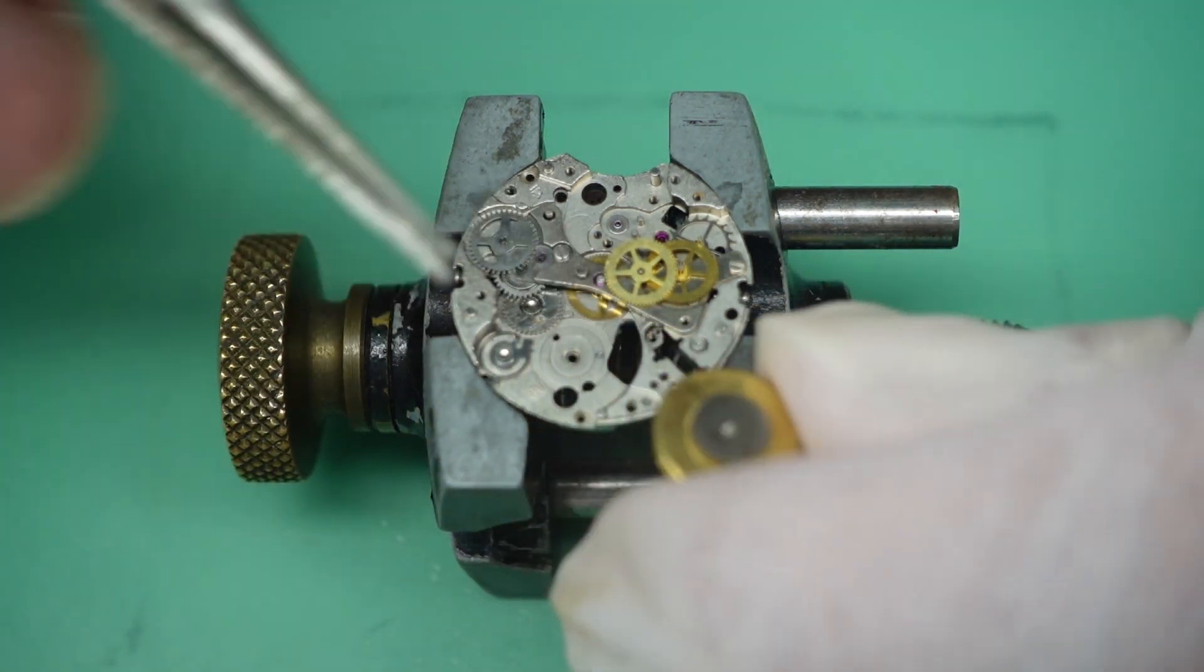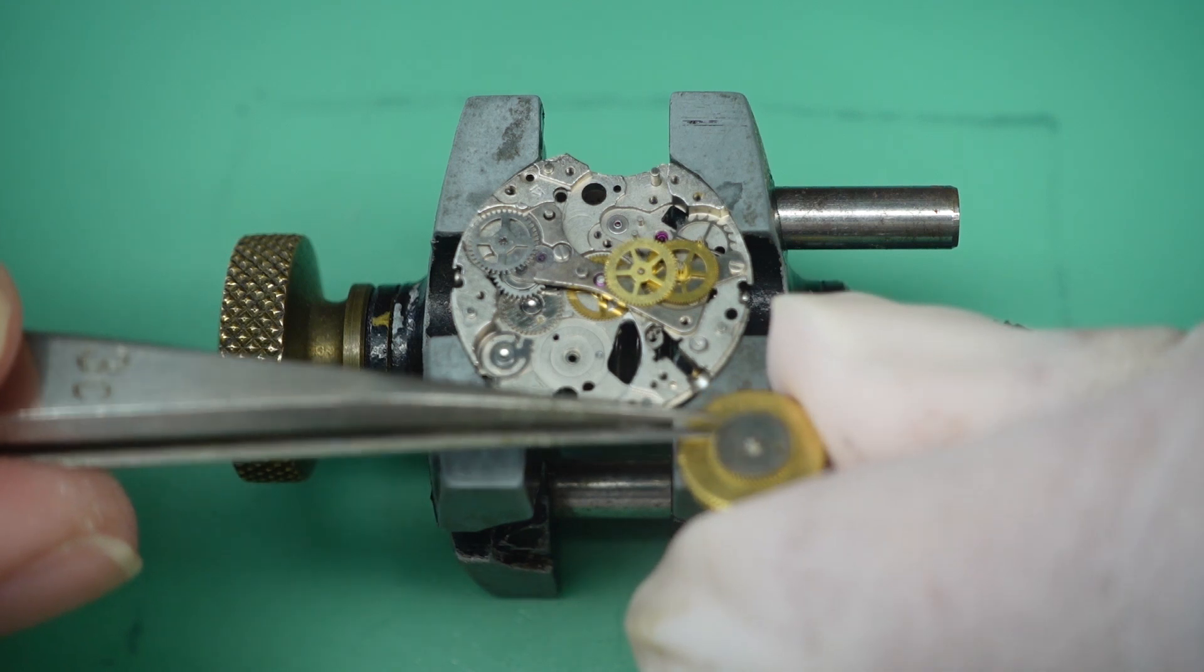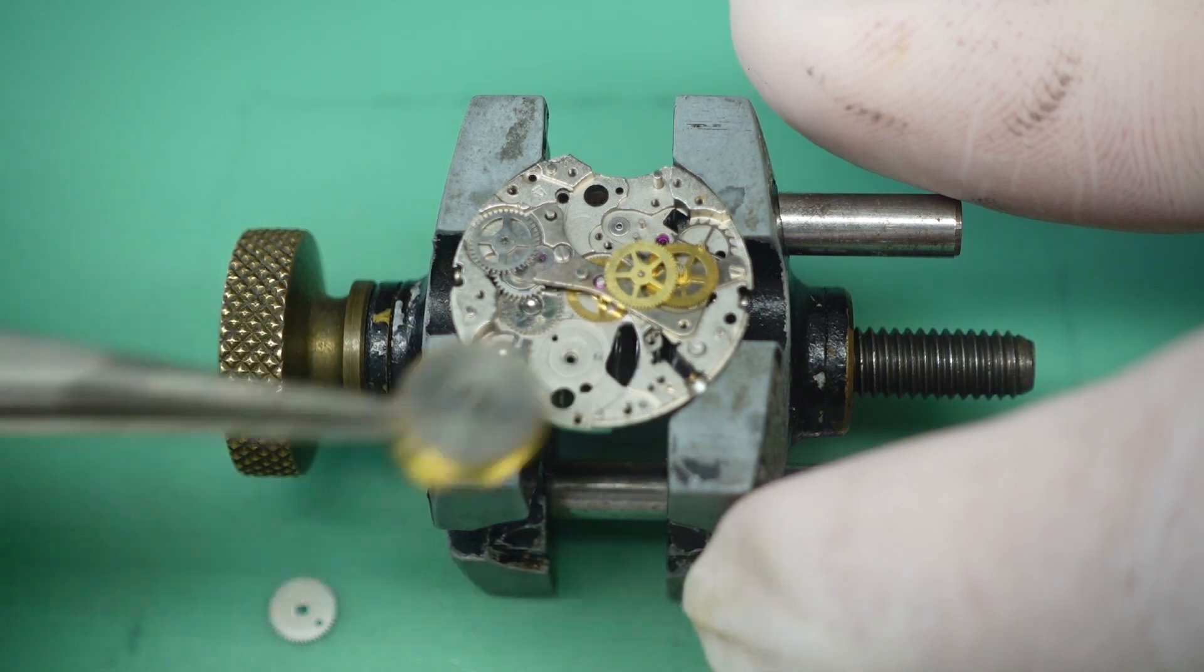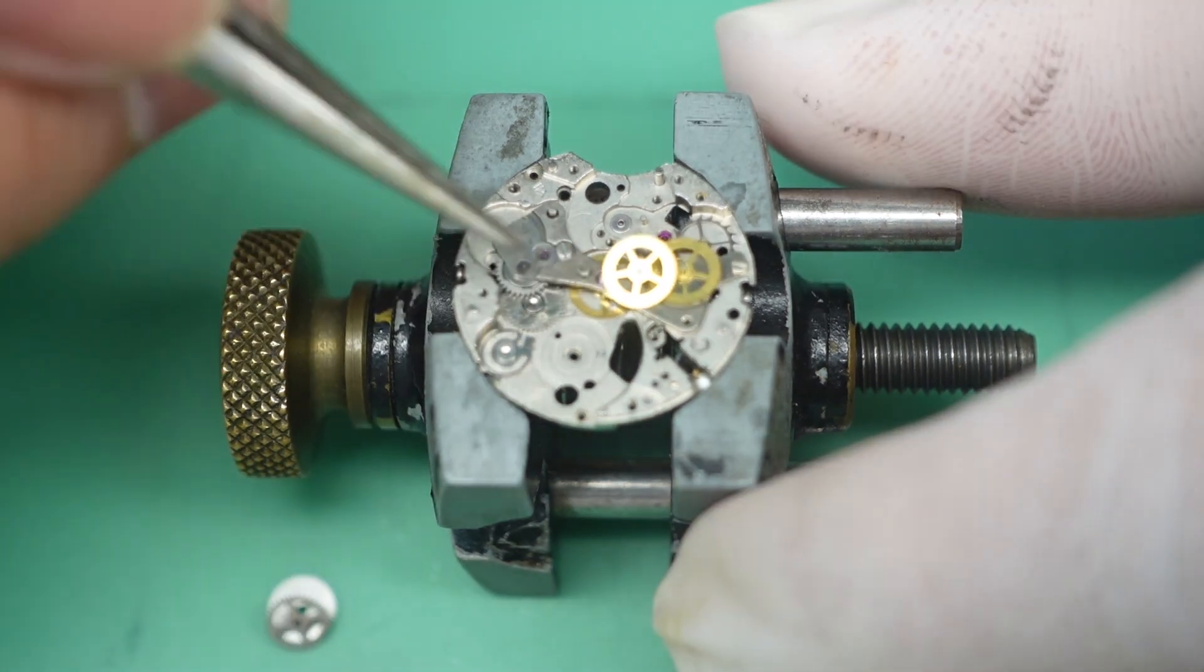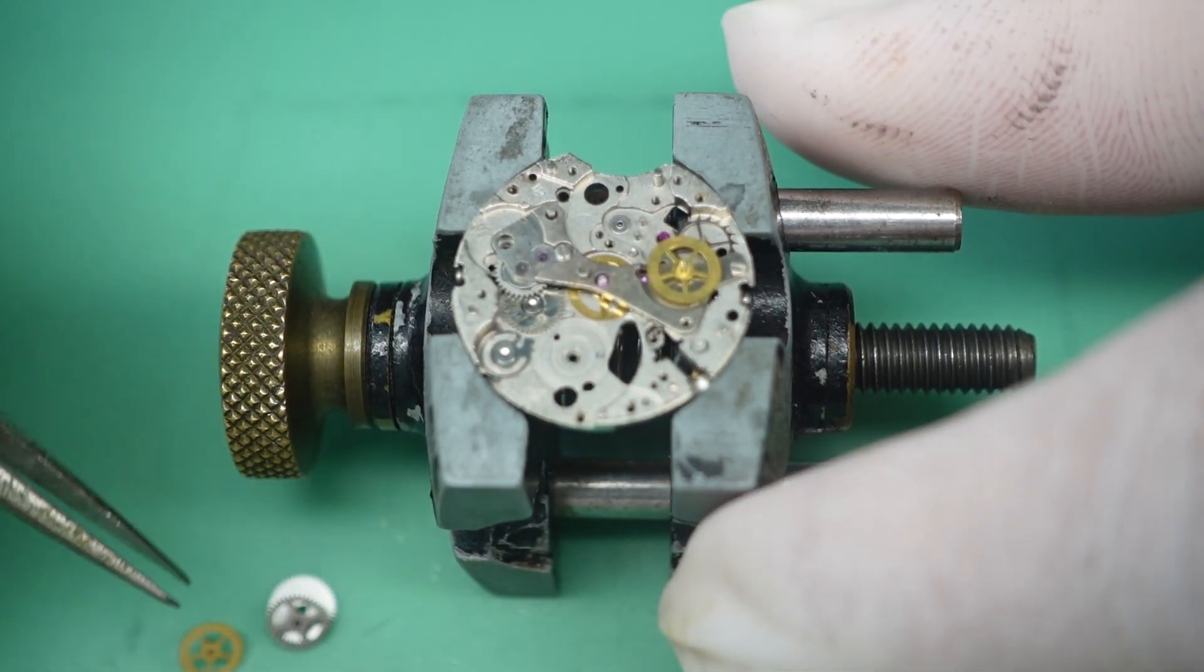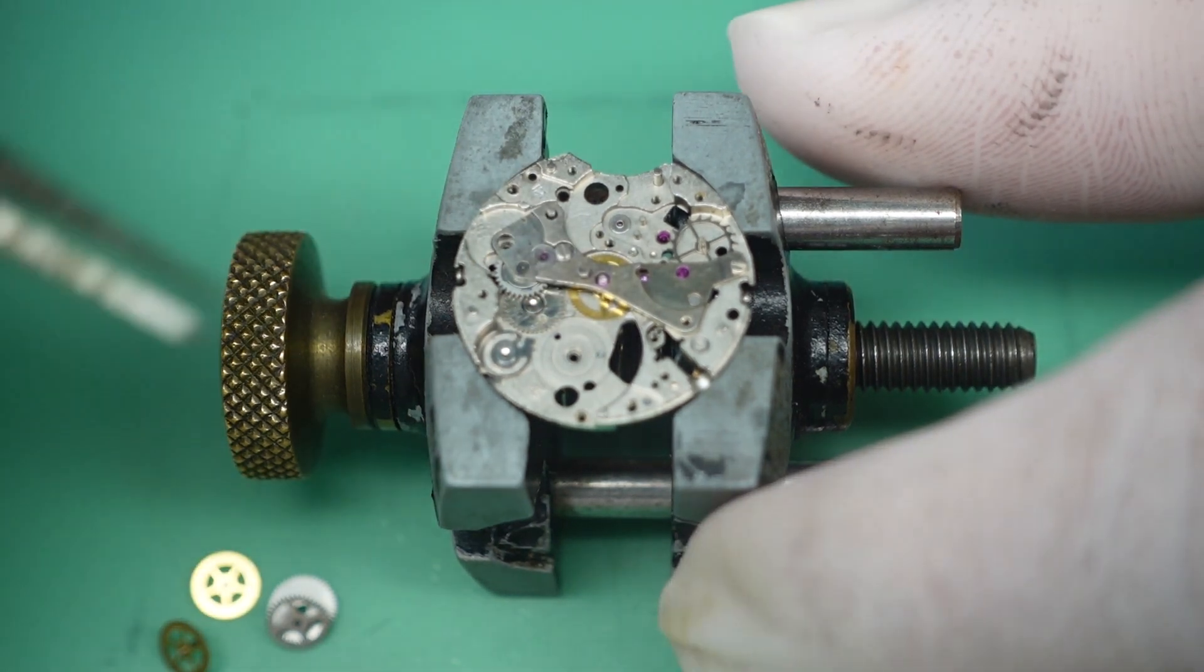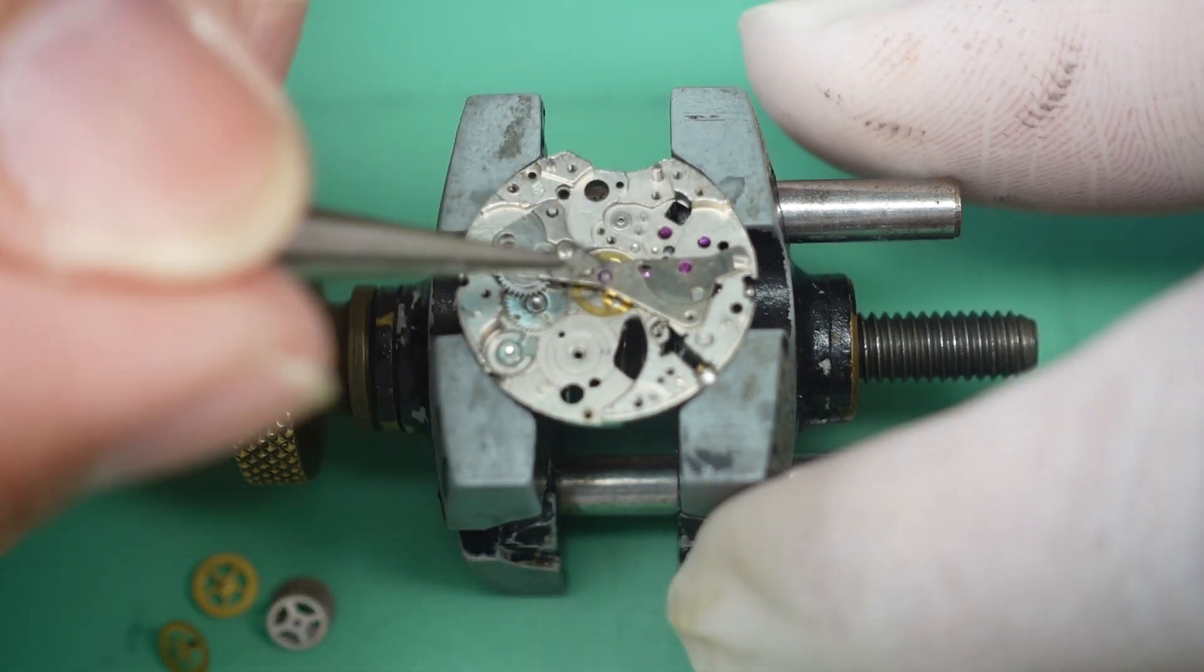Big barrel. Ratchet wheel here. Ratchet wheel, arrow, the third wheel, fourth wheel, escape wheel.